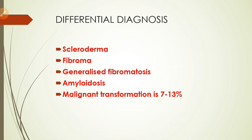The differential diagnosis of OSMF includes scleroderma — a condition where hardening of skin and other body parts occurs due to collagen deposition, affecting not just oral parts but also skin and other organs. It could also be fibroma — a benign tumor of fibrous connective tissue — or generalized fibromatosis, a rare disease with numerous fibrous tumors present at birth. Amyloidosis, involving abnormal protein deposition, is also a differential. The malignant transformation of OSMF is 7 to 13 percent.